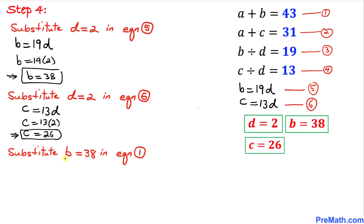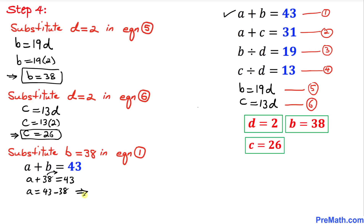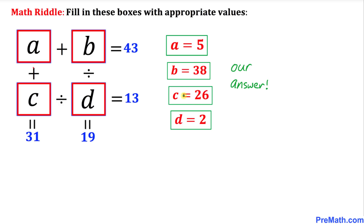For our final step, let's substitute B equals 38 into equation number one: A plus 38 equals 43. Moving 38 to the other side gives A equals 43 minus 38, so A equals 5. Therefore our final values are A equals 5, B equals 38, C equals 26, and D equals 2. So these boxes contain 5, 38, 26, and 2.